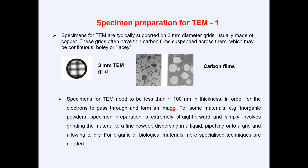For some materials, such as an inorganic powder, specimen preparation is extremely straightforward. It simply involves grinding the material to a fine powder, then dispersing that powder into a suitable liquid, pipetting it onto the grid, and allowing it to dry. This is a very simple procedure for inorganic samples.